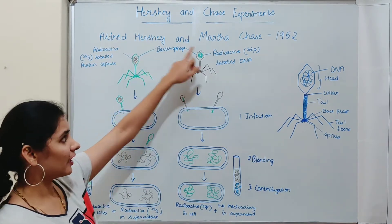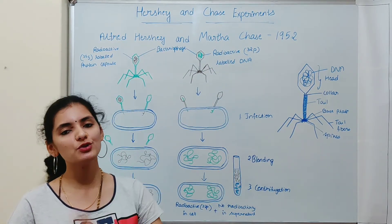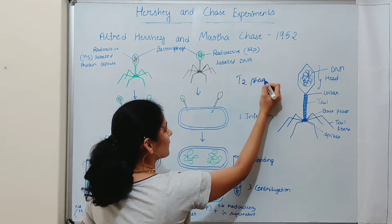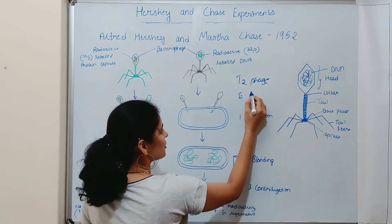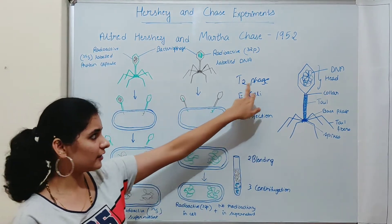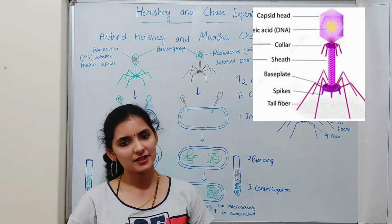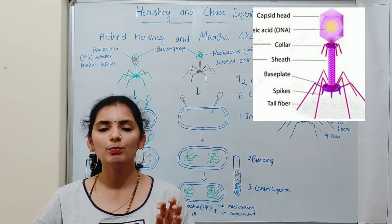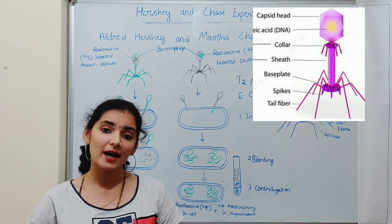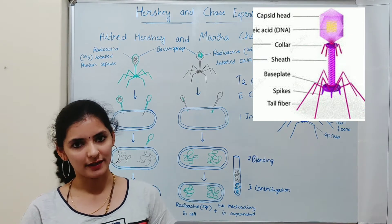Alfred Hershey and Martha Chase conducted this experiment with the help of two key elements: T2 phage and Escherichia coli. T2 phage is a bacteriophage. Bacteriophage means it is a group of viruses, or a virus, which infects bacteria. Bacteriophage is also known as phage or bacterial virus.